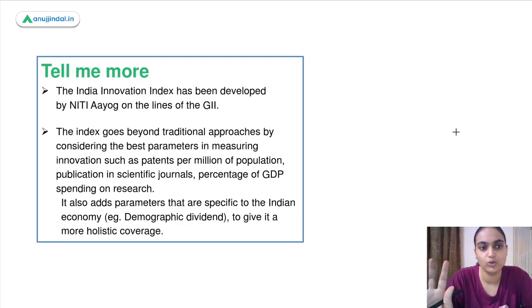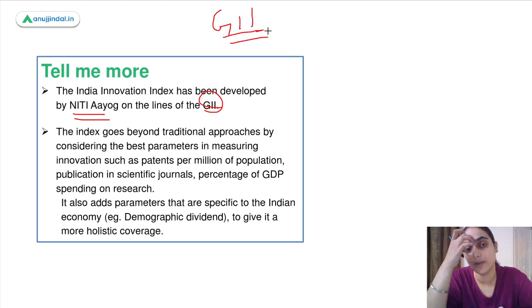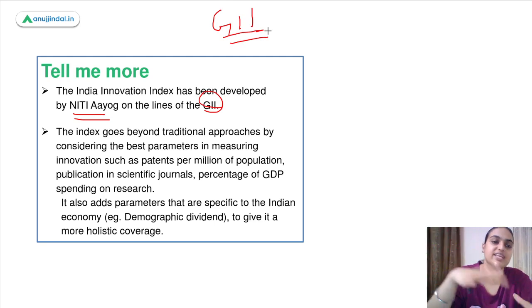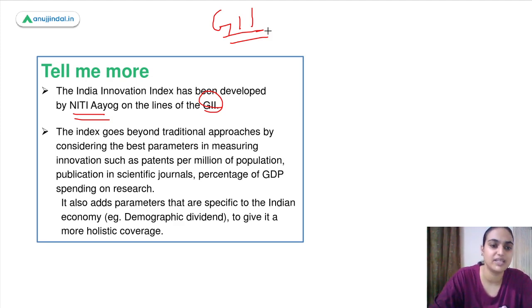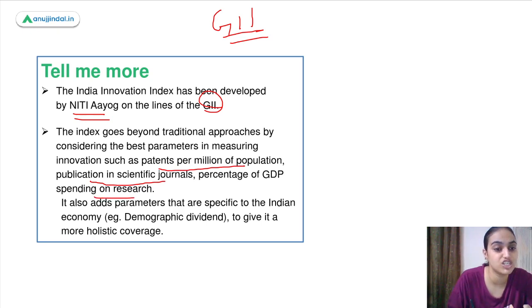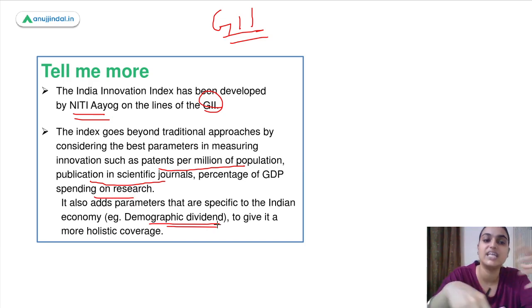On a related note, the India Innovation Index has been developed by NITI Aayog on the lines of the Global Innovation Index. While GII ranks different countries globally, the India Innovation Index assesses innovation levels within India across different states and parameters — such as patents per million of population, publications in scientific journals, percentage of GDP spending on research, and India-specific indicators like demographic dividend.